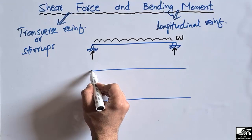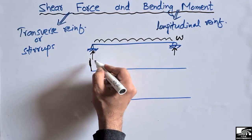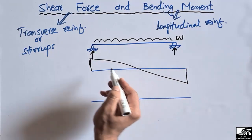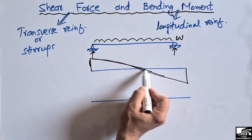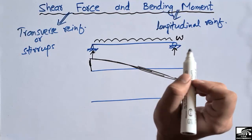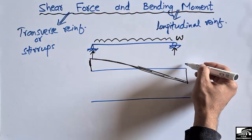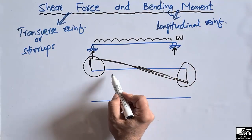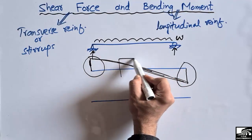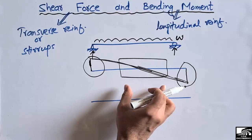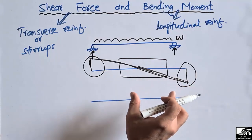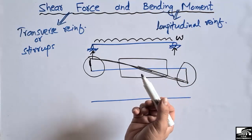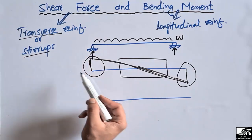To draw the shear force diagram for this beam, it will go up because the support reaction is upward, and then it will go down — and this will be the shear force diagram for this beam. From the shear force diagram we can see that the maximum shear force is at the corners of the beam, while at the mid-span the shear forces are very low compared to the corners or at the supports.